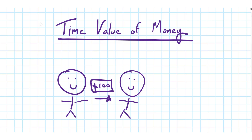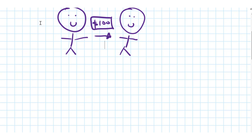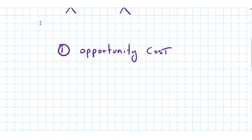There are three factors behind the time value of money. The first idea is opportunity cost. Because your friend owes you the $100, they are denying you the opportunity to invest that somewhere else, or at least put it in the bank and earn interest. That's the idea of opportunity cost — you are deprived of the opportunity to reinvest that money somewhere else.